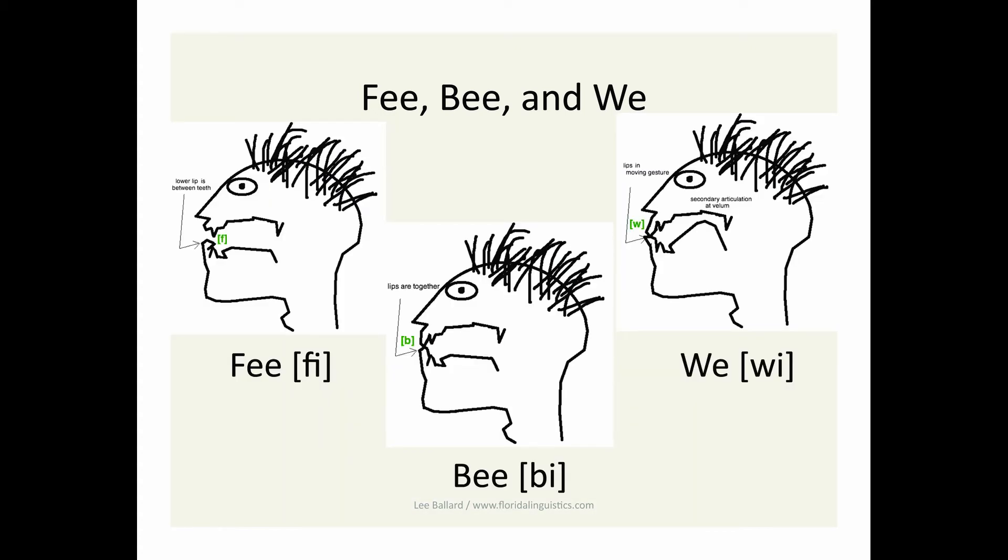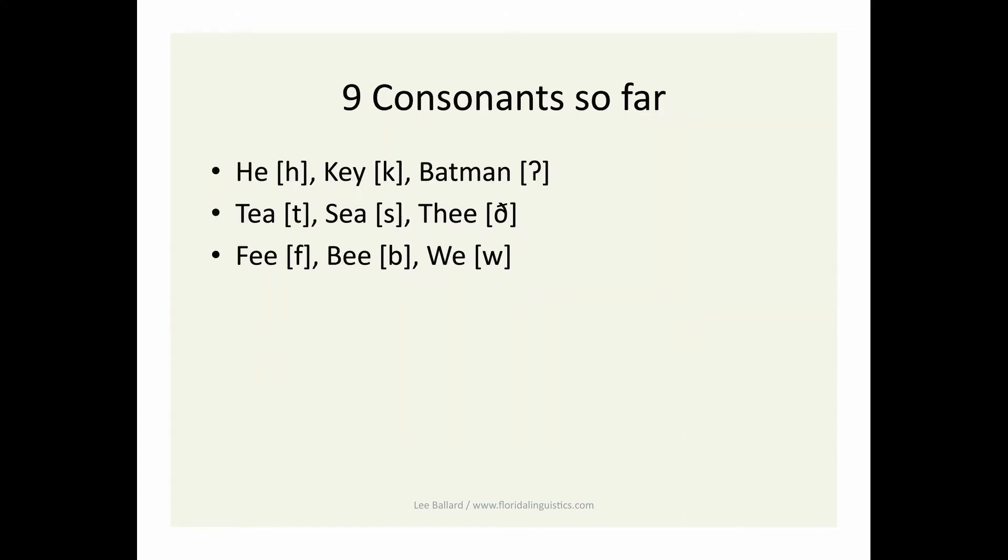Let's recap all the consonants so far. At glottal place of articulation, we've got H as a voiceless glottal fricative, and the consonant in uh-oh a glottal stop. K is a voiceless velar stop. T is a voiceless alveolar stop. S is a voiceless alveolar fricative. And TH, one of the interdental fricatives, since air moves between the teeth. The last consonant in the word teeth, in fact, is the voiceless version of the same consonant in V.